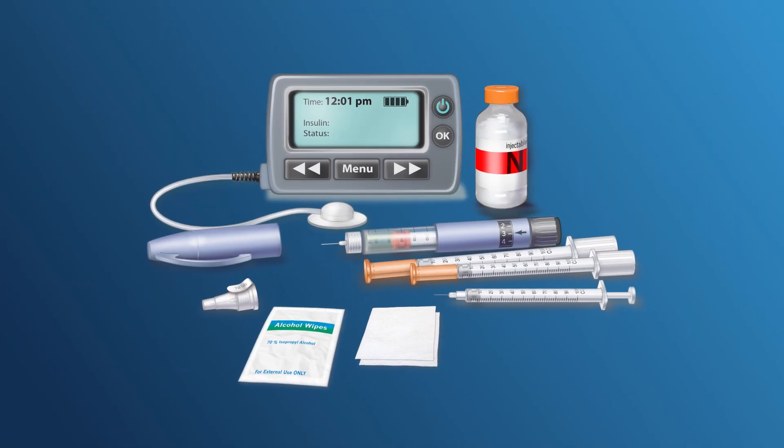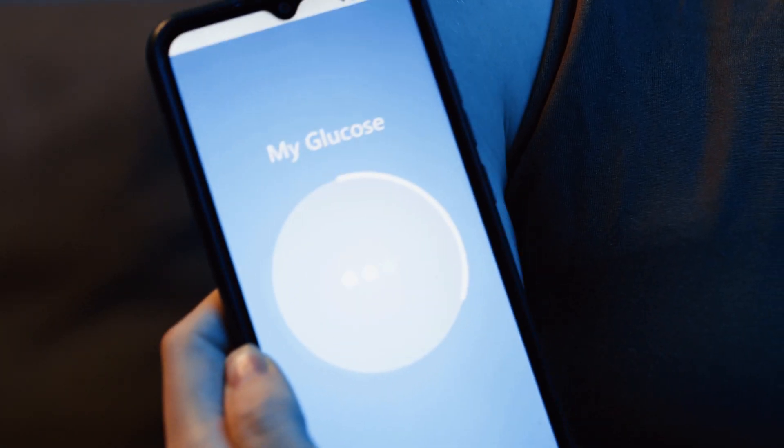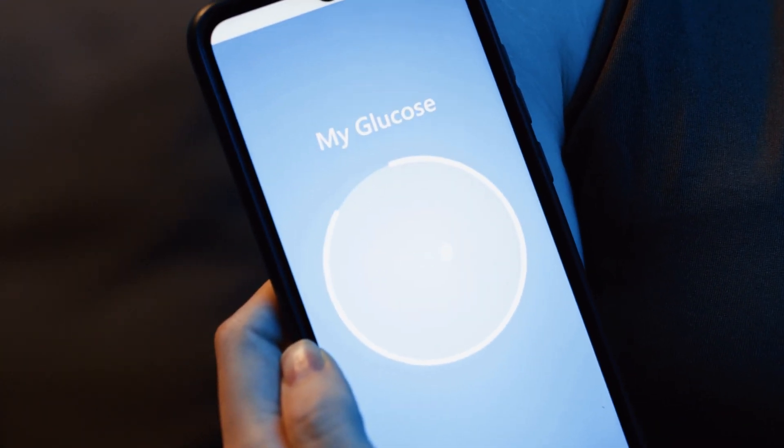Type 1 diabetes is treated with insulin, which comes in many different forms. In addition to insulin, it's important to monitor your blood sugar and nutrition.